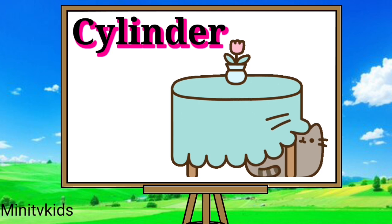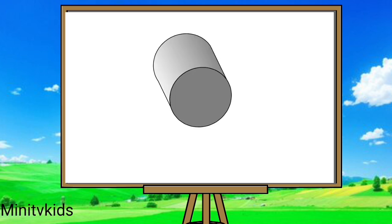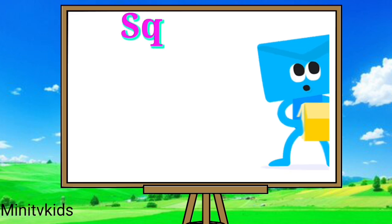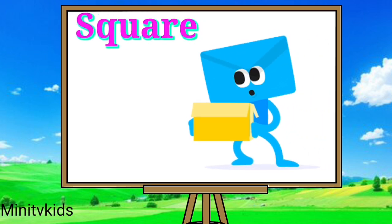Cylinder means Gana car. Square means Gana car.